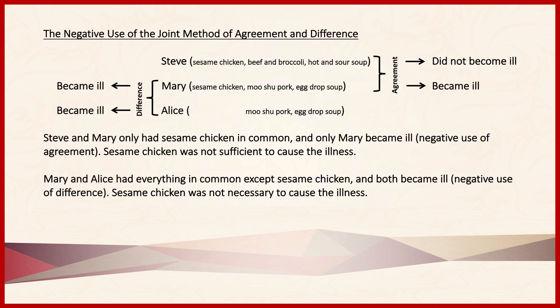The joint method of agreement and difference also has a negative application. Predictably, the negative application of this method is simply either the negative use of agreement or the negative use of difference. So in this example, we actually see both in use. In the upper part of the diagram, we have two individuals, Steve and Mary, who ate very different things except for sesame chicken. That looks like method of agreement. However, as we see on the right-hand side, Steve did not become ill but Mary did — so that's the negative use of agreement. In addition, we have two individuals, Mary and Alice, who had two things in common — mooshu pork and egg drop soup — but not sesame chicken, and yet they both became ill. This again suggests that sesame chicken was not the cause of their illness. So that's the negative use of difference.